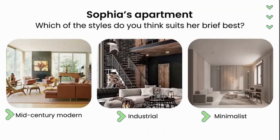We have now covered six of the most common design styles in interior design. There are so many more, such as Scandinavian, Bohemian, traditional, nautical, and many more, but these are the ones I feel will give you the best grounding in your interior design journey and through your projects. Are you able to tell me, after looking at mid-century modern, modern, minimalist, contemporary, industrial, and classic styles, which of these styles would best suit Sophia's apartment brief?